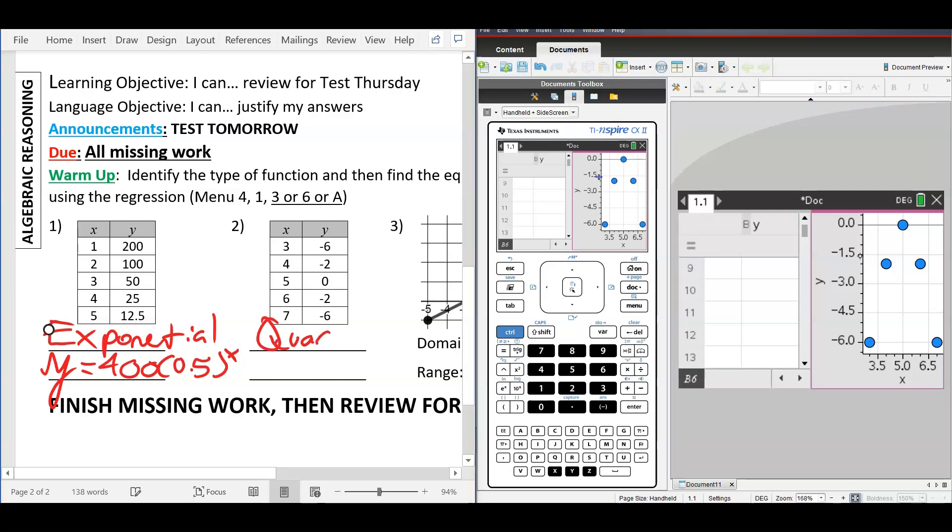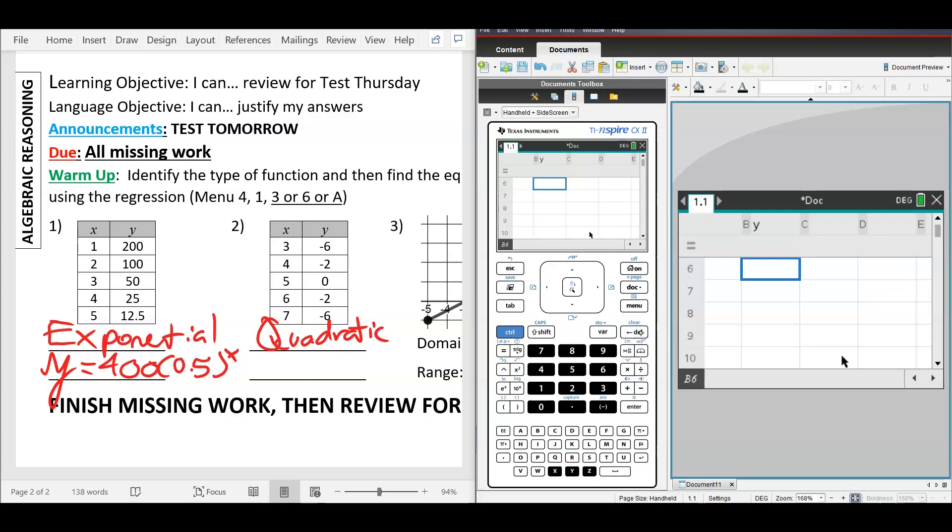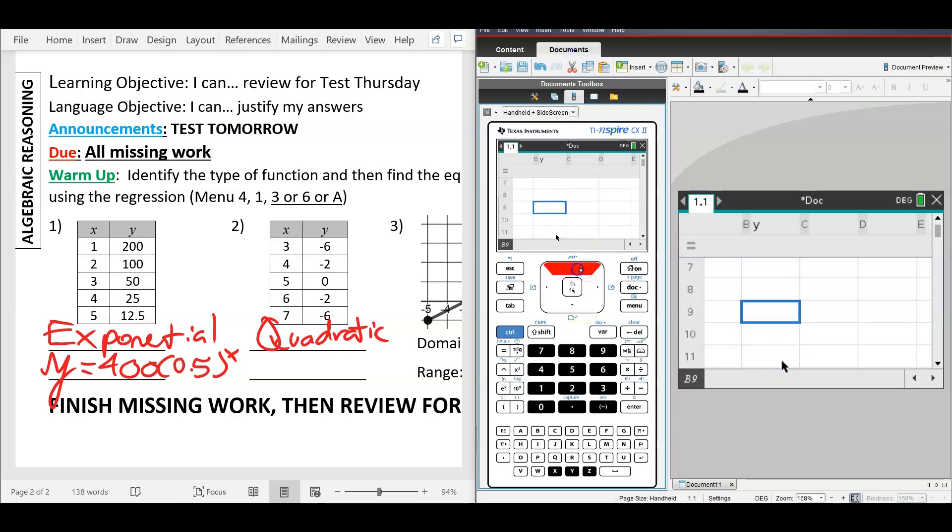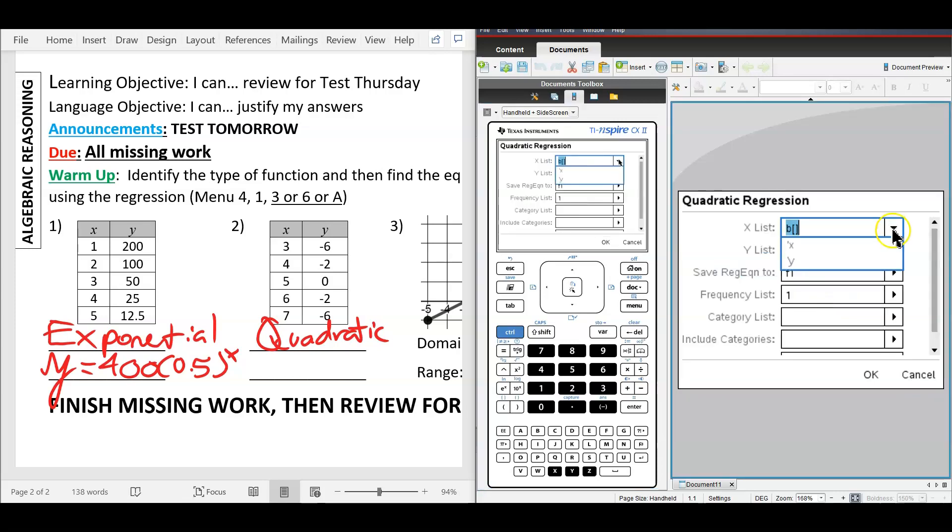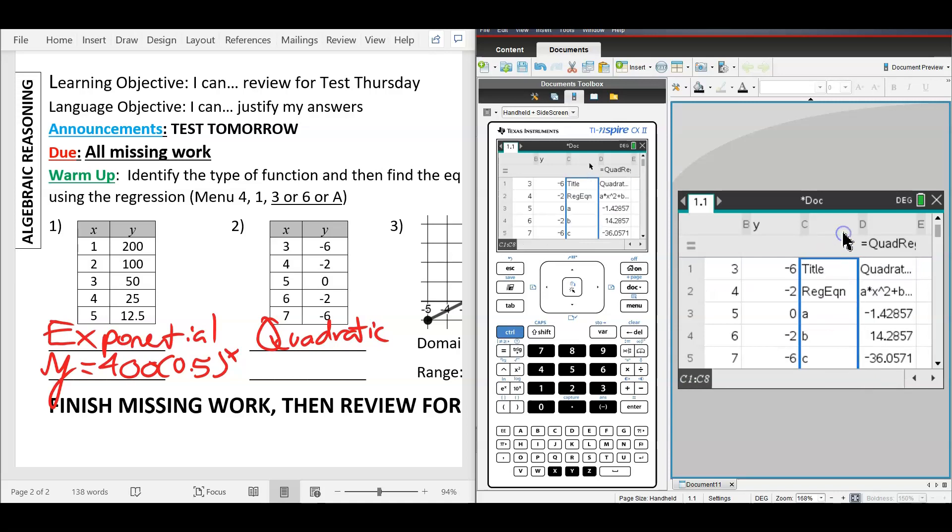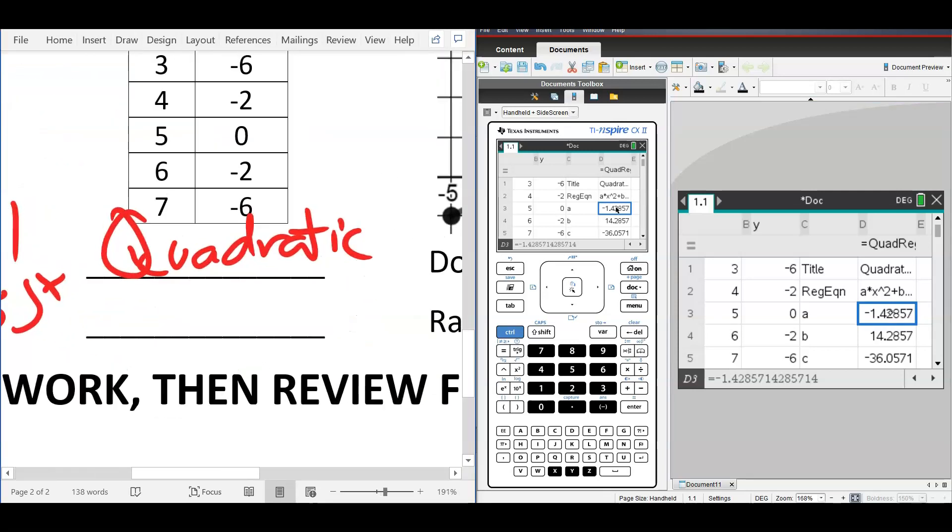Now, if it's quadratic, let's go ahead and get rid of that table or that half screen. Control K delete. And then what we want to do is menu 4-1, and for quadratic which one is it? Y'all see it on there? Number 6 is quadratic. So we're going to press Menu 4-1-6. X must be X, Y must be Y. Now you might have to scroll up to get it. If you get ugly numbers, that's fine.